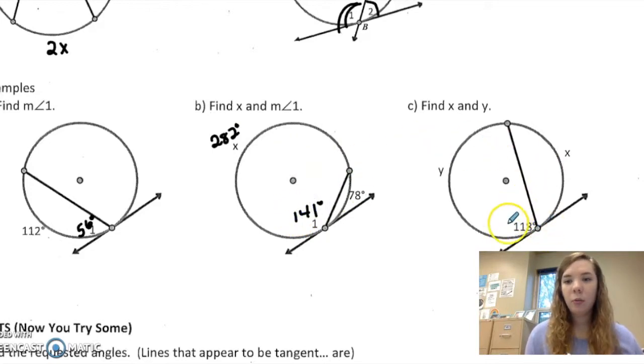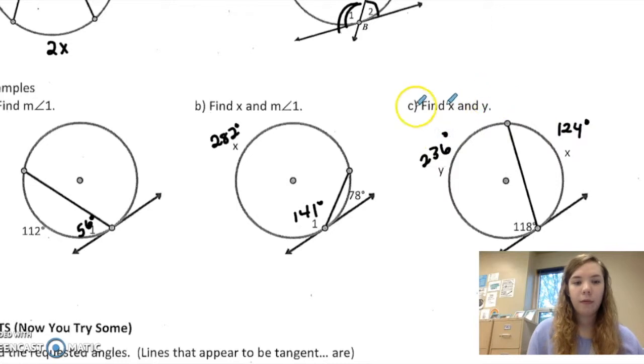Here, if this angle is 118, then the arc is twice that much, or 236 for y. And then 360 minus 236 is 124 for x.